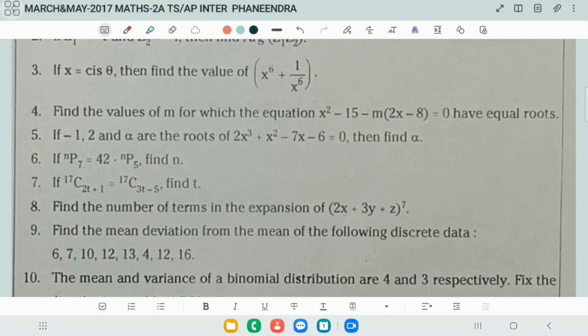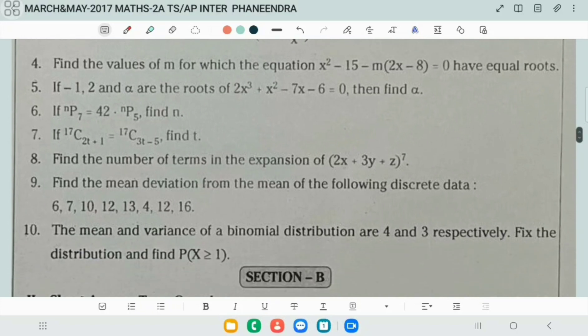Find the values of m for which the equation has equal roots. If minus 1 comma 2 and alpha are the roots, then find alpha.